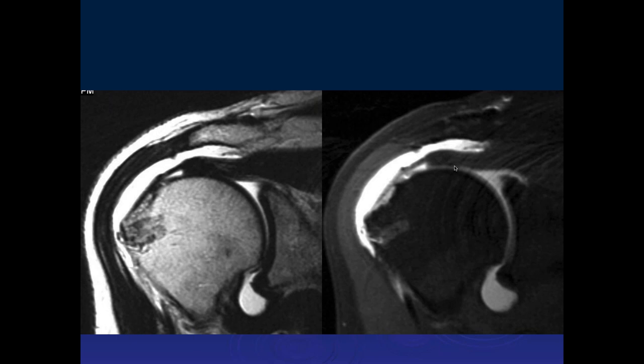If you look at the distance from the end of the cuff to where that staple is, it's too long to put in place and tack down. That's why MR is really important — it can reveal these significant tears that are watertight and would be missed on arthrogram.